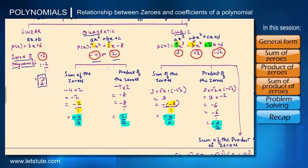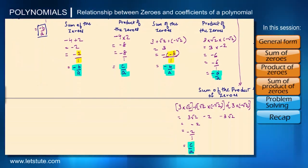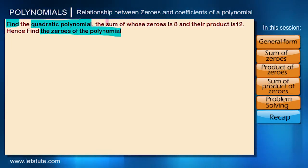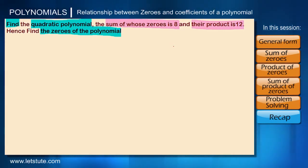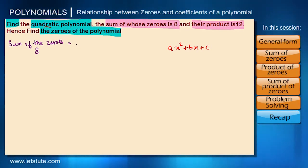With the help of these relationships, we can solve different types of problems based on zeros of a polynomial. Suppose we are asked to find a quadratic polynomial given the sum of its zeros as eight and the product as twelve. We don't know what the polynomial is, so we call it ax squared plus px plus c, the general form. We know the sum of zeros is eight, and for any quadratic it equals minus p upon a, so eight equals minus p upon a.